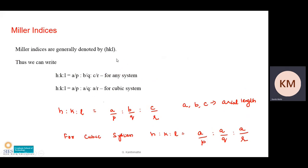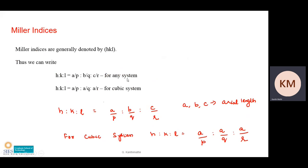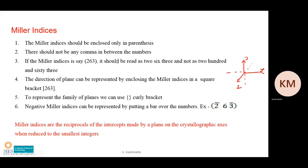Miller indices are generally represented by the letters h, k, l, where h:k:l = a/p : b/q : c/r for any crystal system. For a cubic system, h:k:l = a/p : a/q : a/r. Miller indices must be enclosed only within closed parentheses with no commas between the numbers, and should be read as '2 6 3' not 'two hundred sixty-three.' Numbers in closed parentheses represent a plane; in square brackets, a direction.